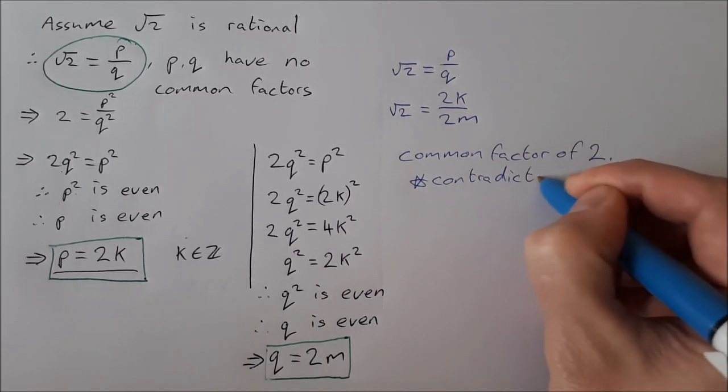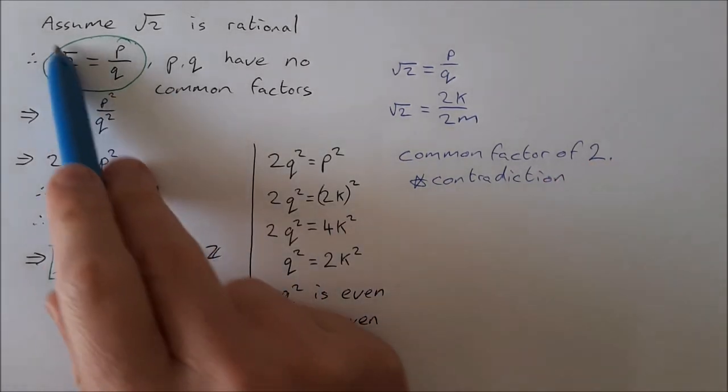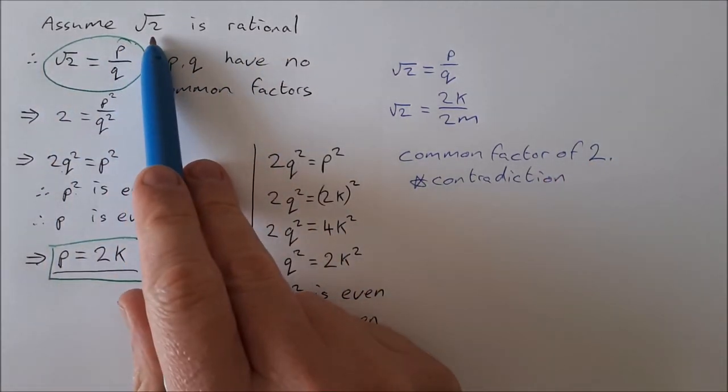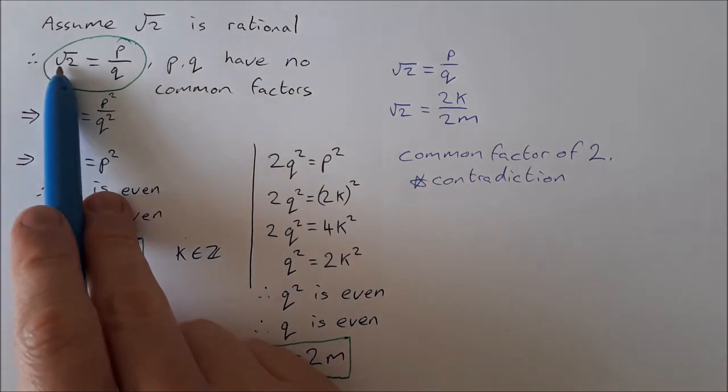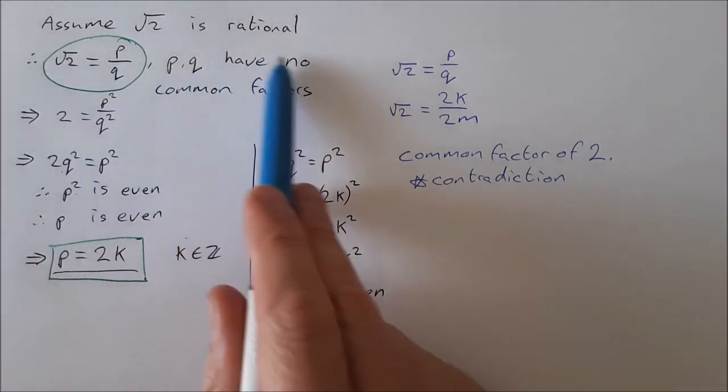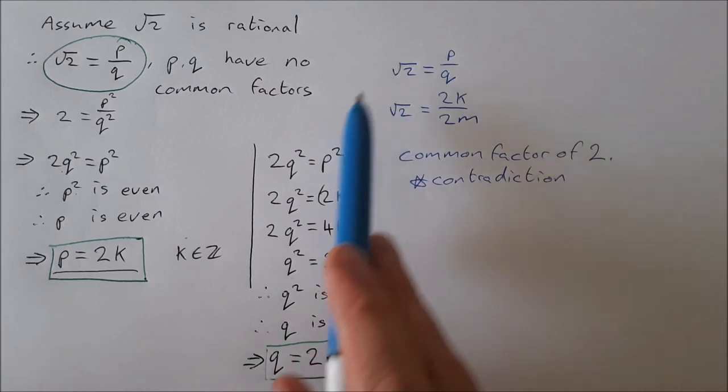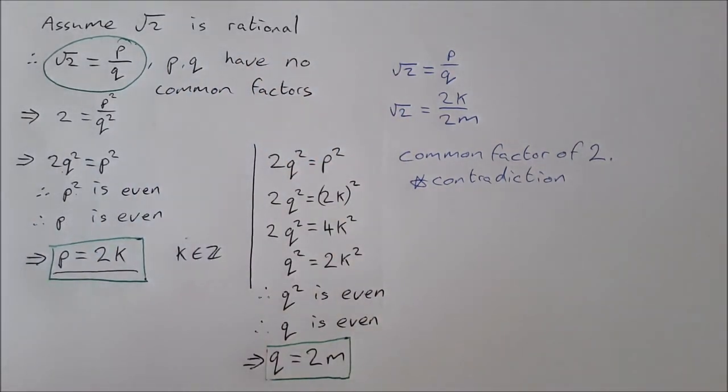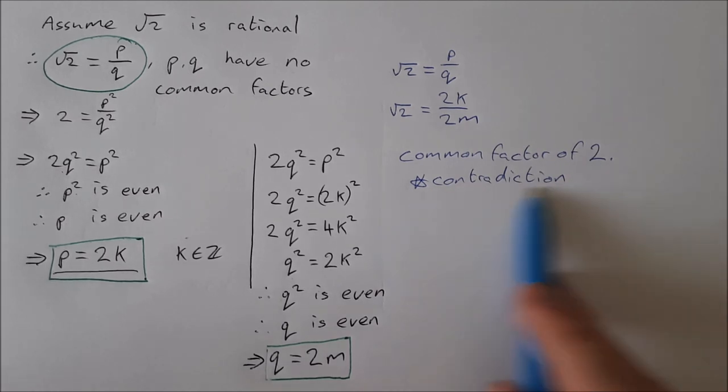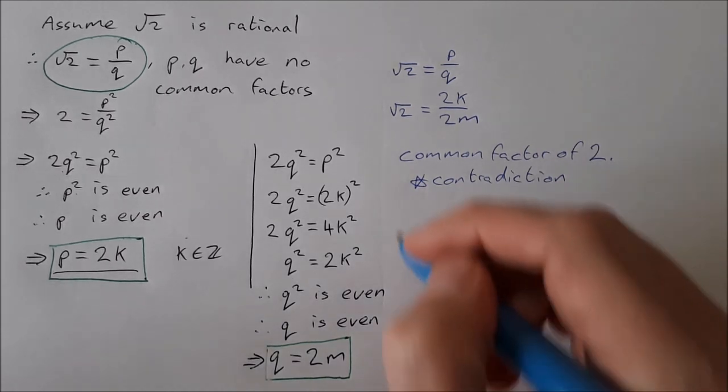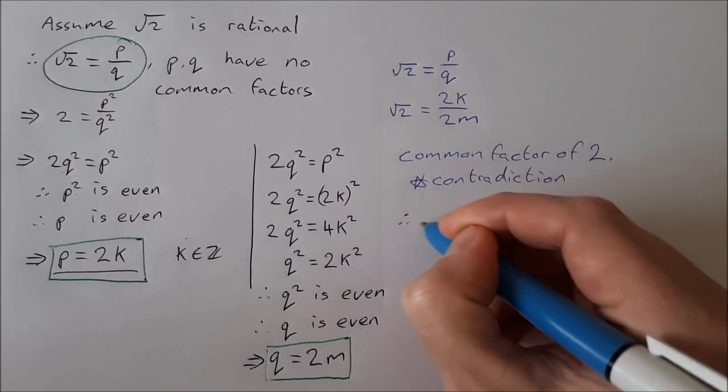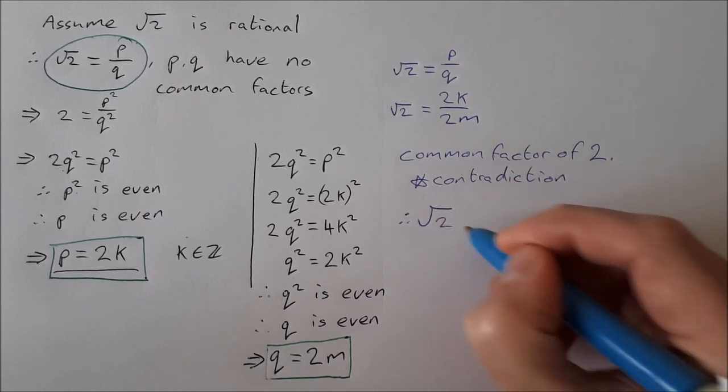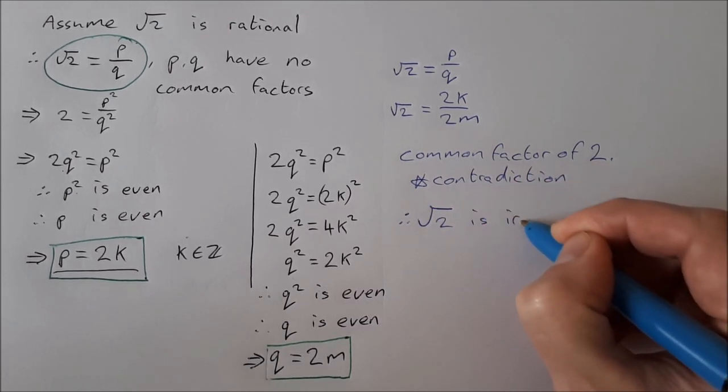Remember at the start we said if the square root of 2 is rational, then it can be written as p over q where p and q have no common factors. Now we've just proven that if it was in fact rational it would have a common factor of 2, and that is the contradiction. So therefore the square root of 2 is irrational.